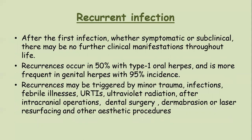Herpes has a capacity for latent infection. After the first infection — whether symptomatic or subclinical — there may be no further clinical manifestations throughout life, or recurrence is seen in 50% of cases with type 1 and more than 95% of cases with type 2 infection. Recurrence is triggered by minor trauma, infection, febrile illness, URTI, ultraviolet radiation, intracranial operation, dental surgery, dermabrasions or laser resurfacing and other aesthetic procedures. It is better to take a history of recurrent herpes infection before undertaking any aesthetic procedure in a patient.